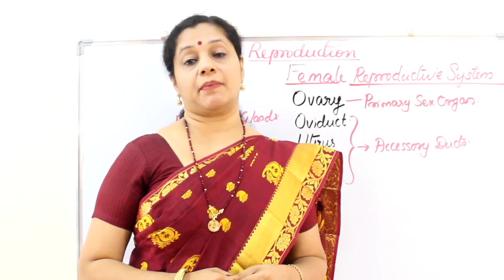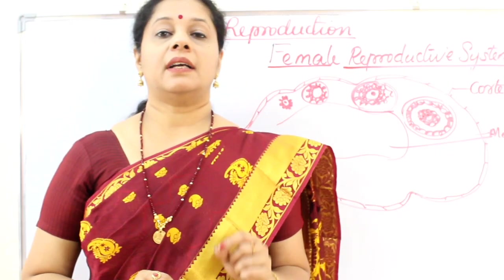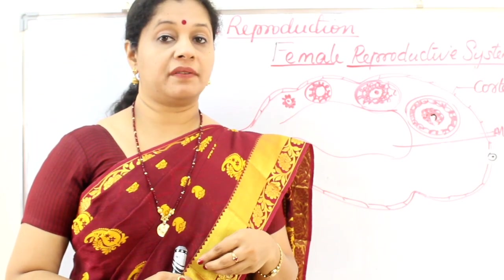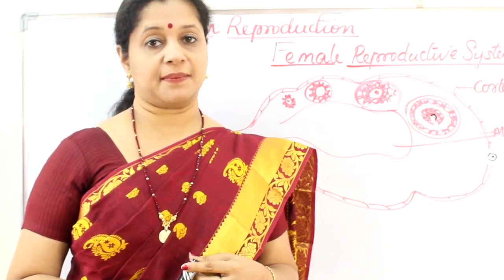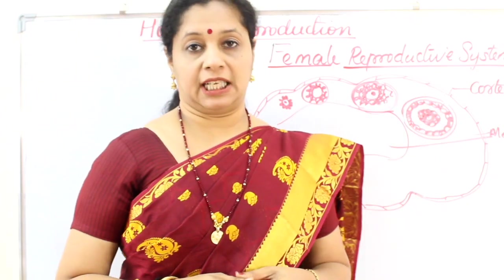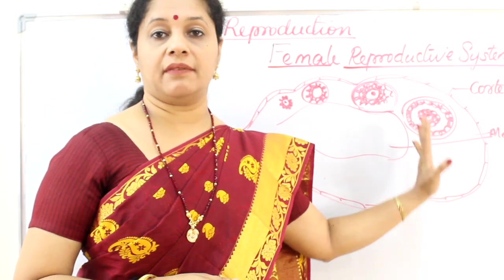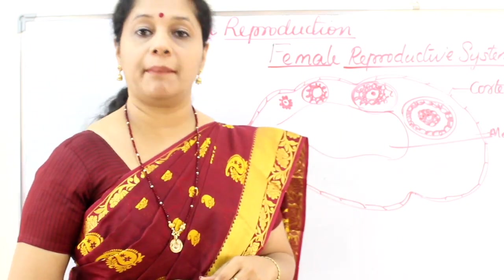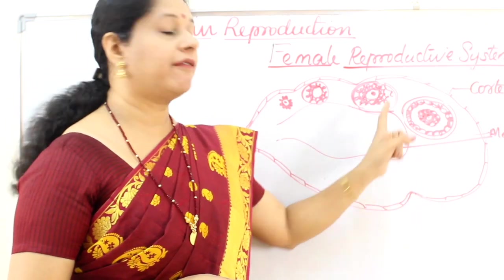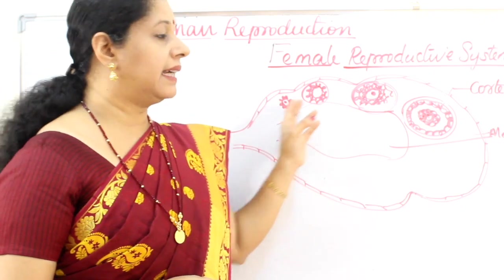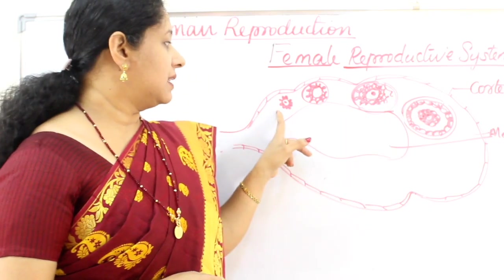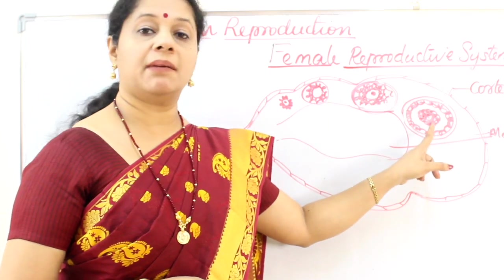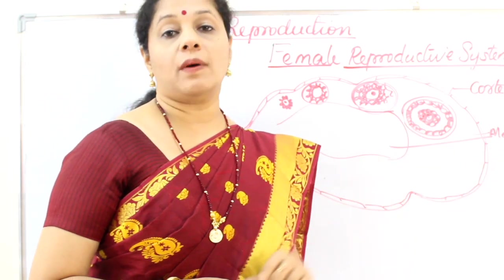Let us begin with the structure of the ovaries. A pair of ovaries are present, located in the lower abdominal region. Each ovary is 2 to 4 cm in length, connected to the wall of the pelvis and the uterus by ligaments, and covered by a thin layer of germinal epithelium. The ovarian stroma fills the entire ovary and is divided into two regions: the outer peripheral cortex and the inner medulla. In the cortical region, follicles of different kinds are found, maturing during the menstrual cycle — from primary to secondary to tertiary to Graafian follicles, which rupture and release the ovum.